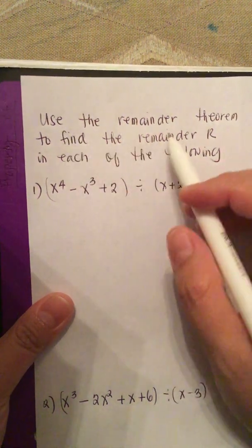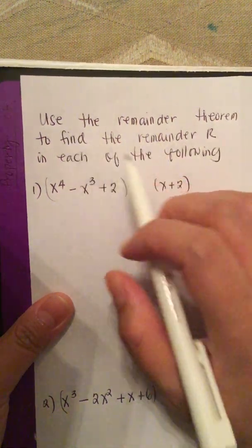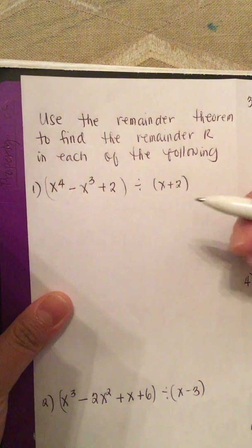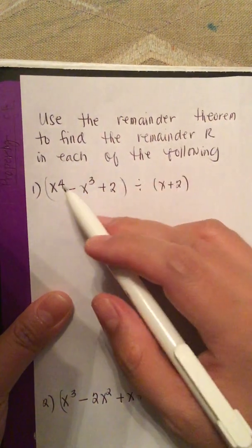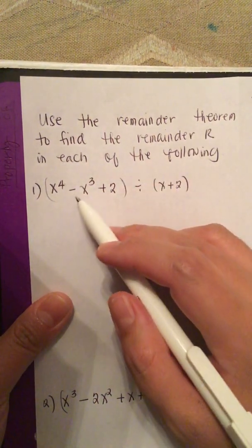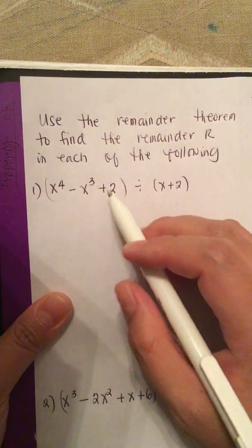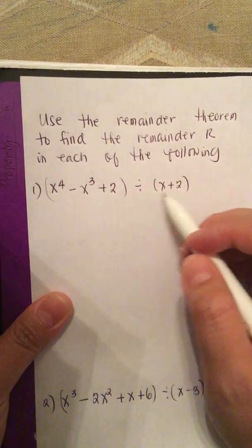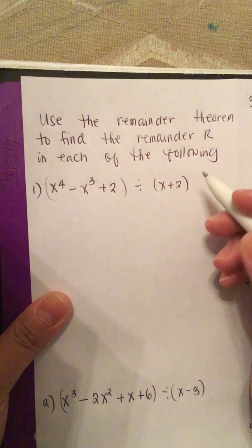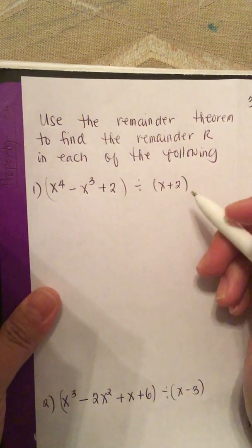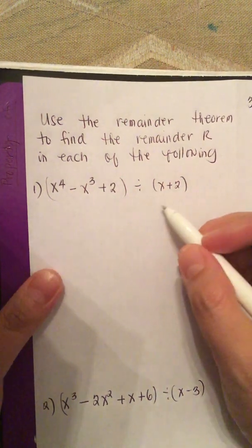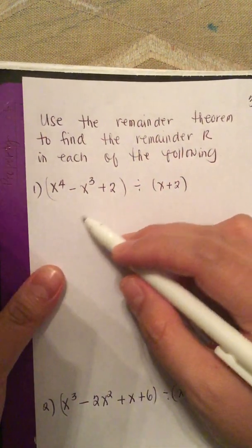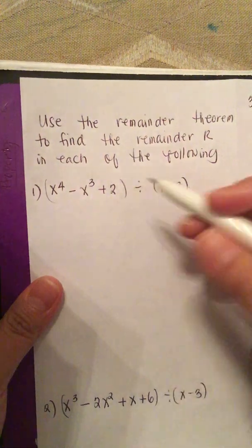Use the remainder theorem to find the remainder r. We have x to the 4th minus x cubed plus 2, divided by x plus 2. To solve this, we use synthetic division.